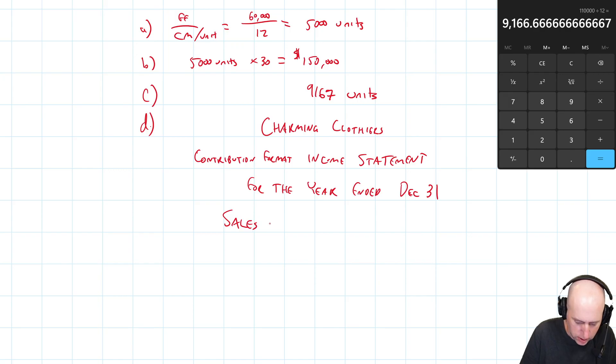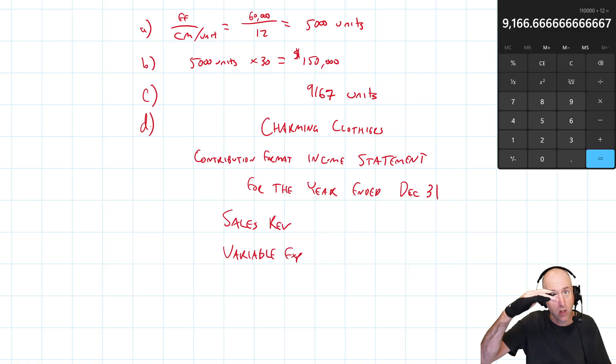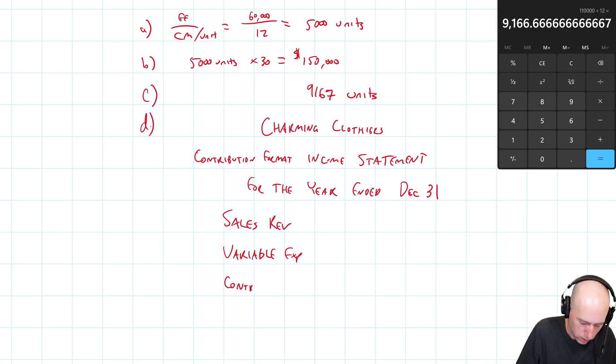So then we just go down our accounts. It's going to be sales revenue, variable expenses. Now again, a traditional income statement, a conventional one would be sales minus COGS is gross profit, then our operating expenses. But this is sales, variable expenses. The subtotal is not gross margin or gross profit, but contribution margin, minus fixed expenses equals operating income.